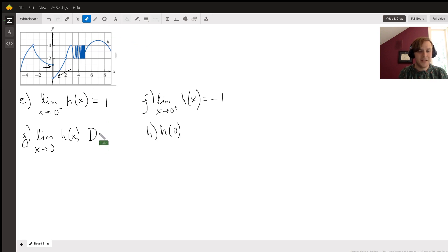does not exist. So we would write DNE, meaning does not exist. So that's the answer for part G.